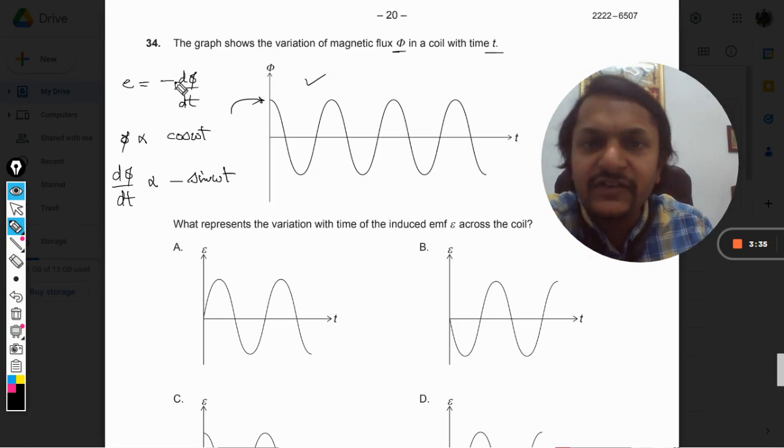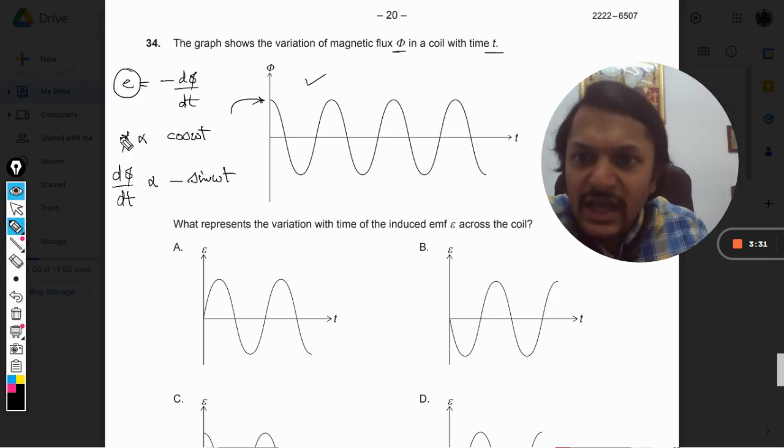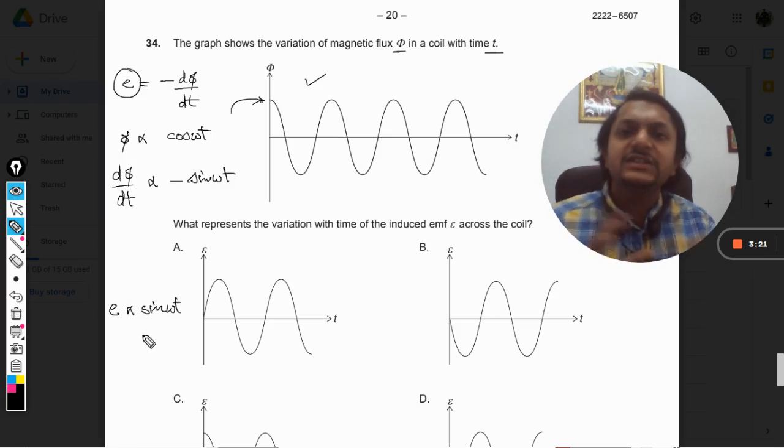So it will be negative of the sine omega t, but there is already a negative present in the formula. So when we concentrate on the emf produced, these two negative signs will get cancelled.